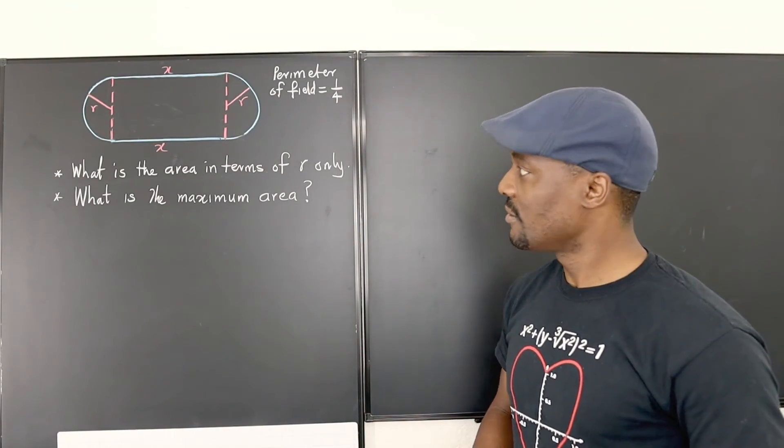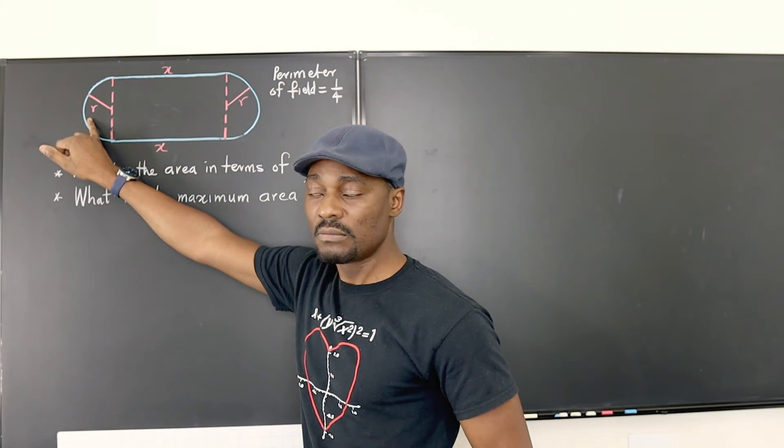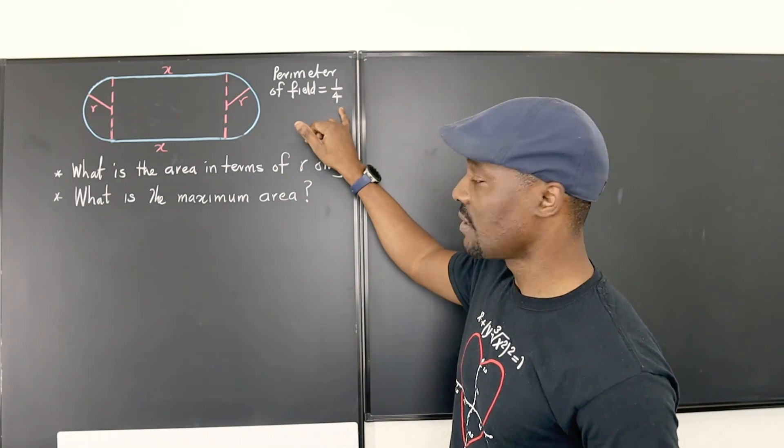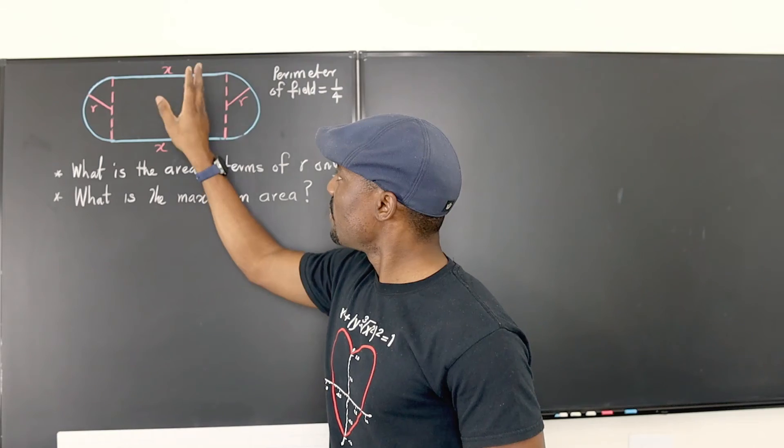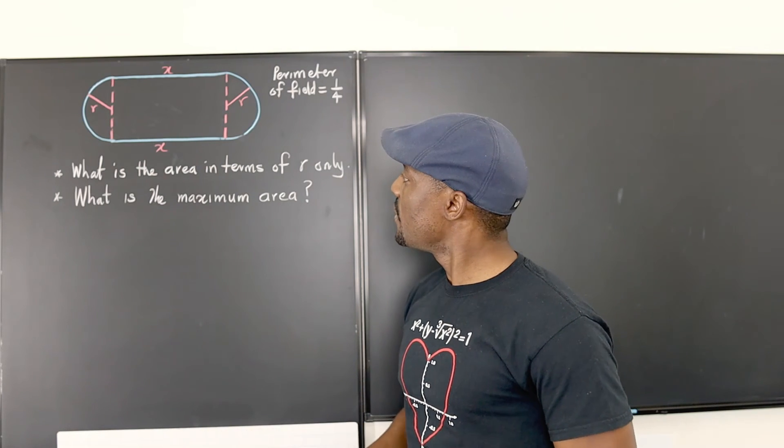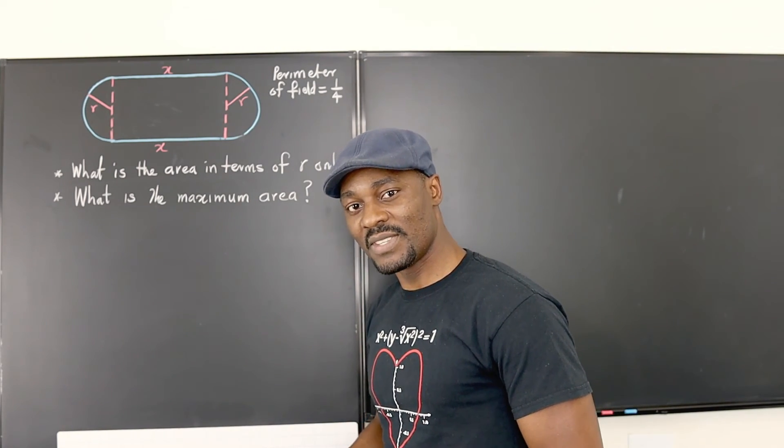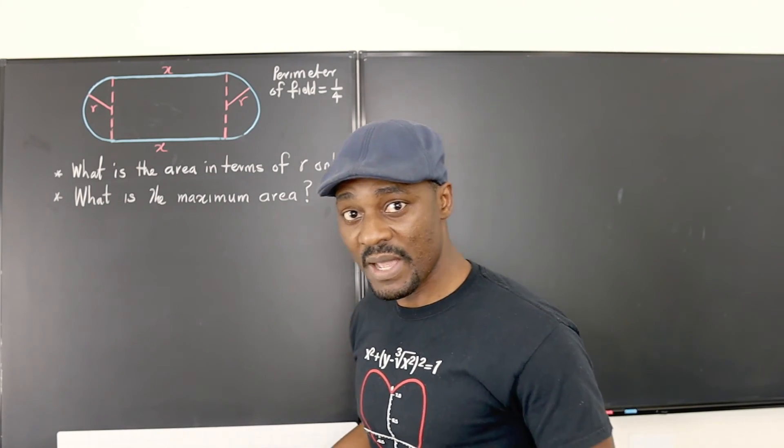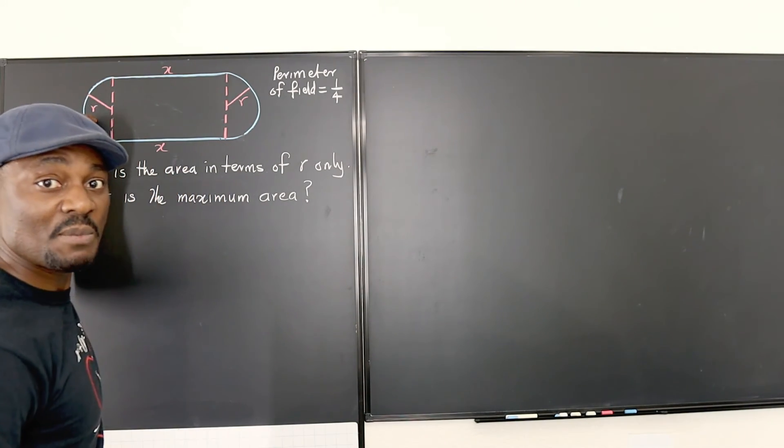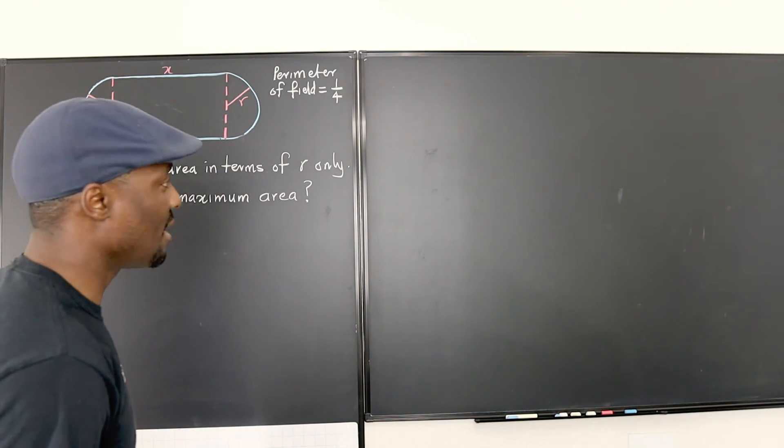So this is a field, a typical field that has a rectangle in the middle, has a semicircle on either ends and the radius of the semicircle is R. There are no numbers right now apart from this which we're going to come back to use and you have the sides of the rectangle are each X. The first thing we're supposed to do is to find the area in terms of R only.